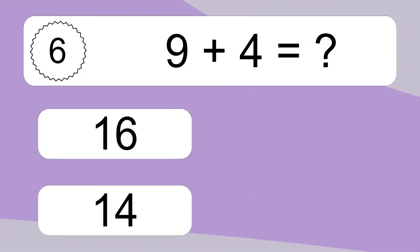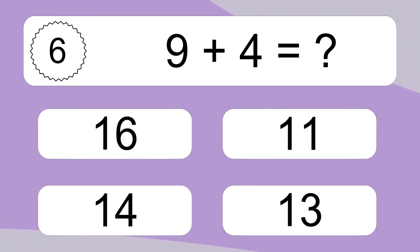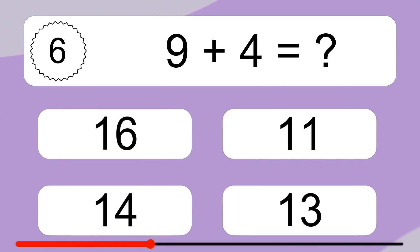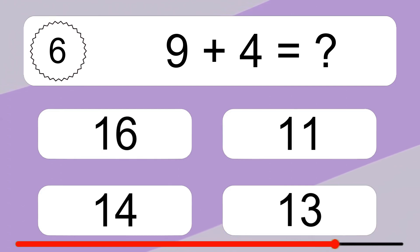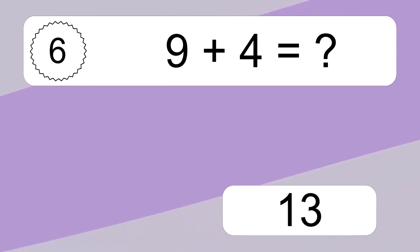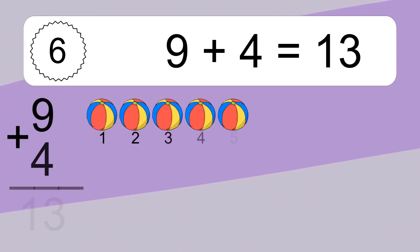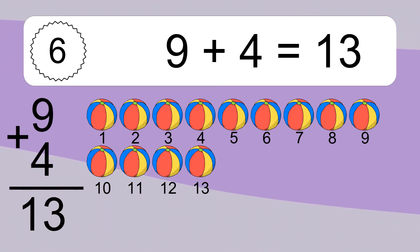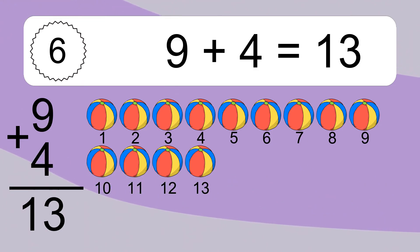9 plus 4 equals what? 9 plus 4 equals 13. Let's count it. 1, 2, 3, 4, 5, 6, 7, 8, 9, 10, 11, 12, 13.